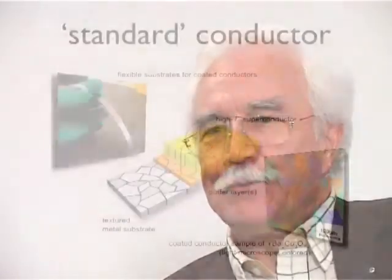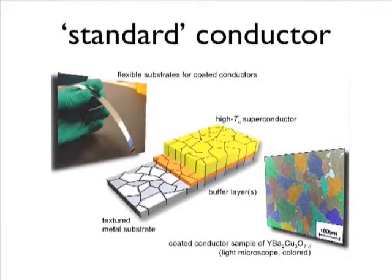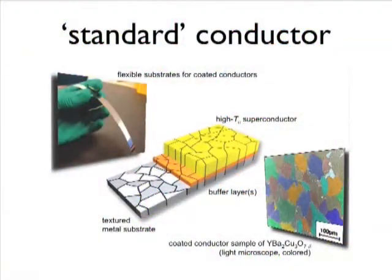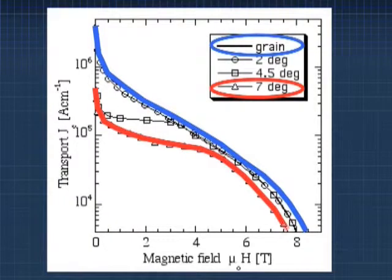We understand what weakens the high-temperature superconductors. YBCO coated conductors, there's all the big issues of grain alignment, grain texturing, grain boundaries, current paths, and knowing what happens in high magnetic fields.